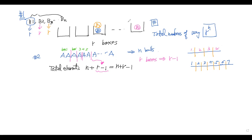So the total number of different ways to distribute n indistinguishable balls into r boxes is C(n plus r minus one, n) — you choose the positions of the n balls among the n plus r minus one total elements. That is the answer for part two, where some boxes may be empty.